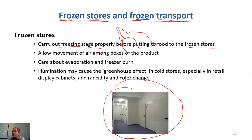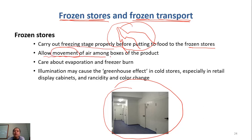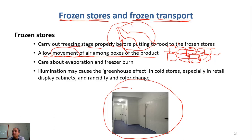We already discussed the possible effects of slow and fast freezing — which are more advantageous and which have limitations in terms of impact on the food. During frozen storage, we must ensure that we allow the movement of air among boxes of the product. If you stack your product too tightly, the cold air cannot ventilate through the boxes, and the inside may not maintain a low temperature very well.